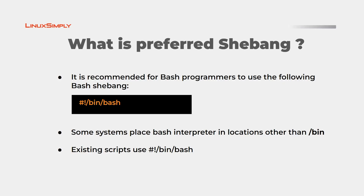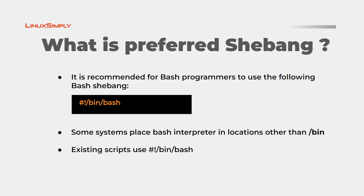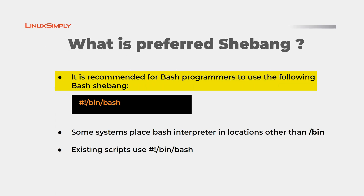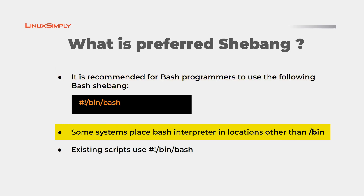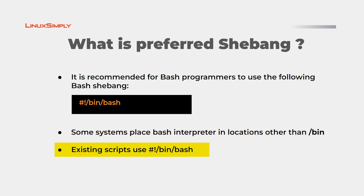Now a question comes up: what is the preferred shebang? Bash programmers are recommended to use the usual shebang — that is, using /bin/bash as the path to your interpreter. However, some Linux systems place the bash interpreter in different locations other than /bin. For that, you can mention the environment as bash in the shebang line. Also, a lot of existing scripts use /bin/bash as the path to the interpreter, so it is recommended to use the shebang in the usual way.